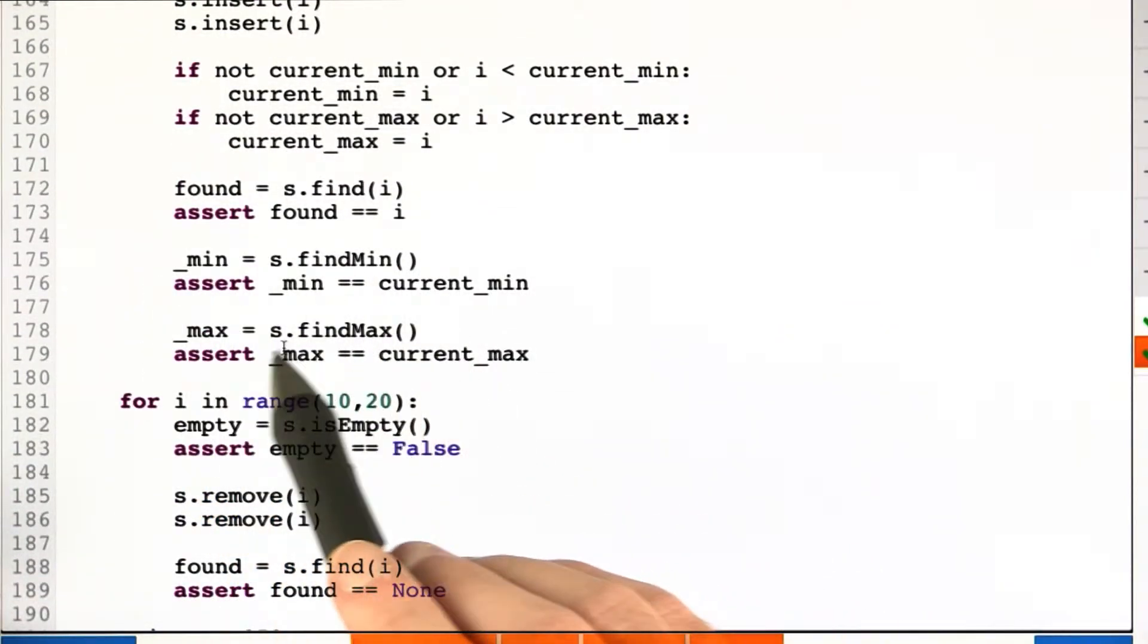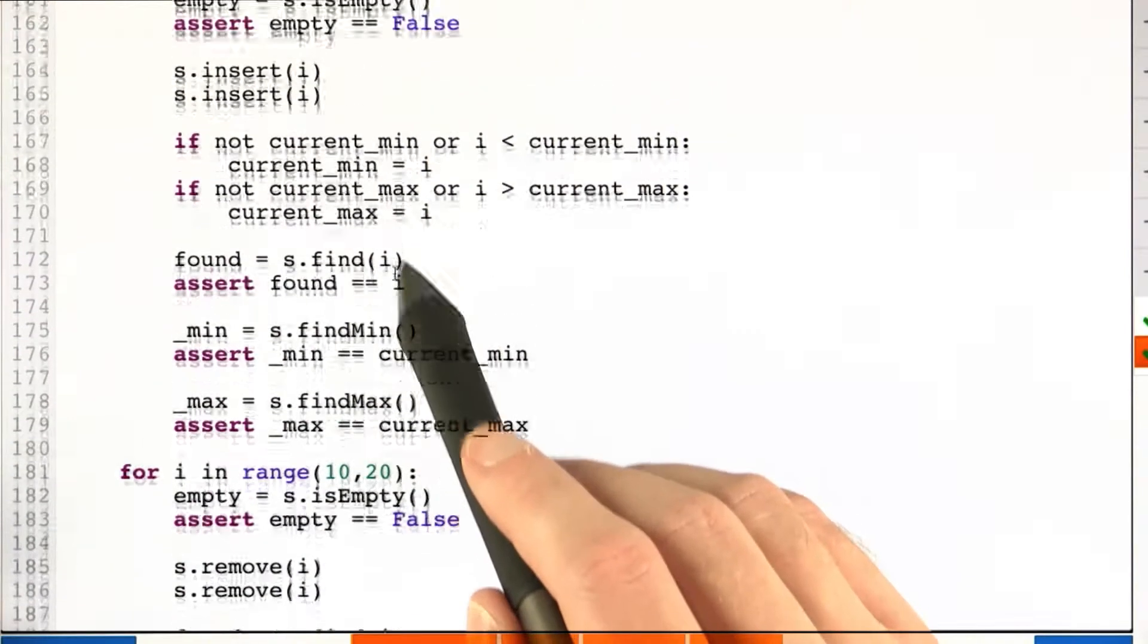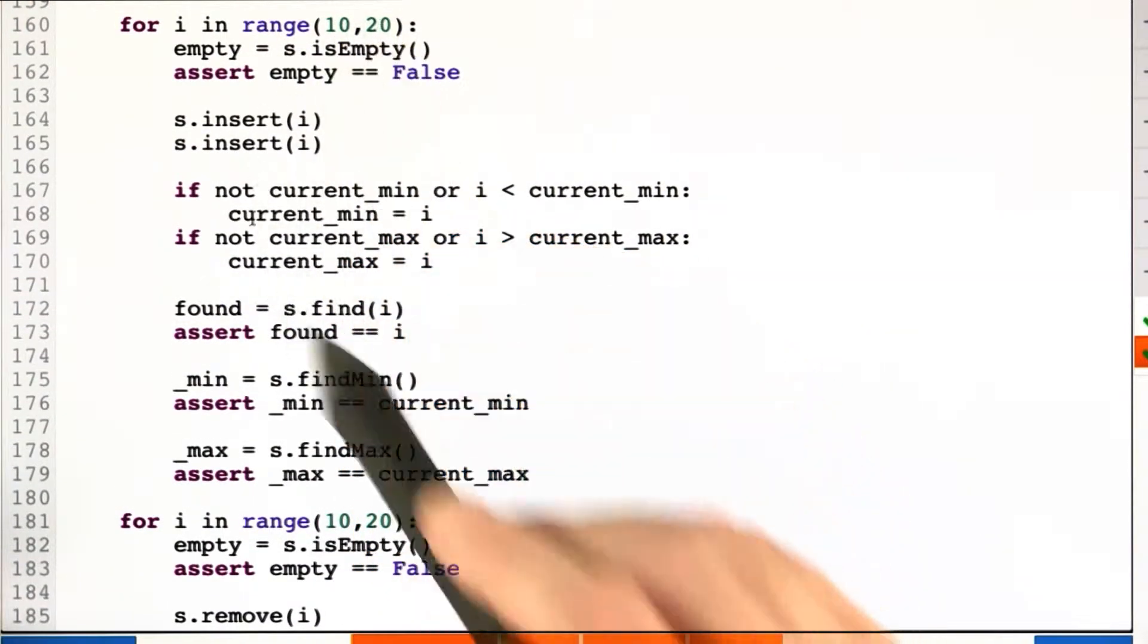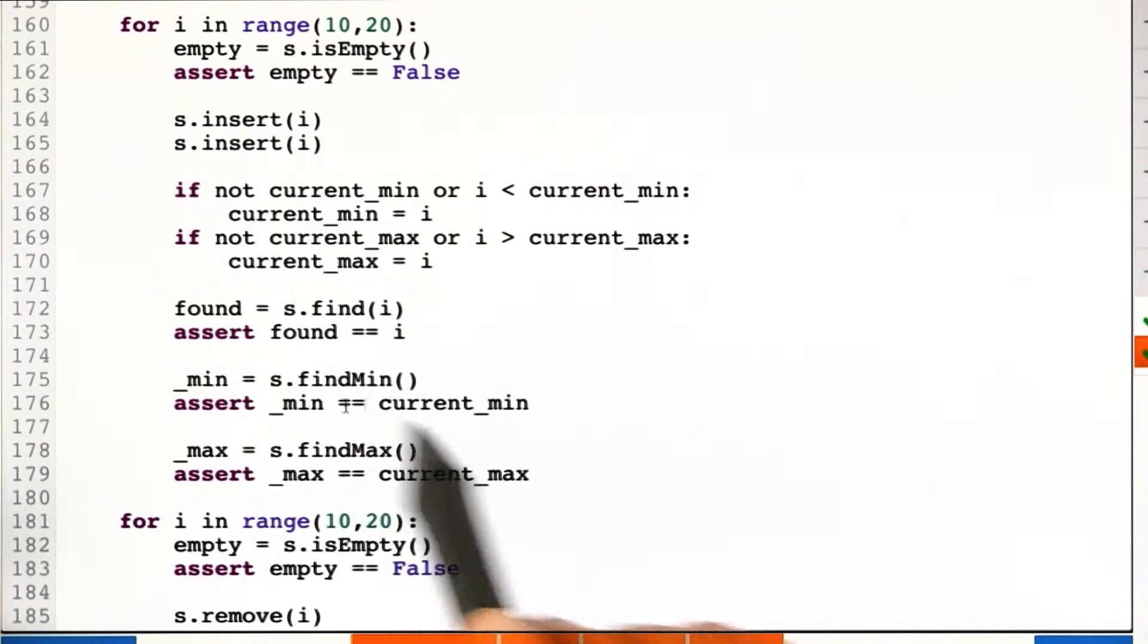Now we check the min and the max. The max shouldn't change since we're going from 10 to 20, and we've already inserted 100. But the min should change each time. So this should test the find min function right here.